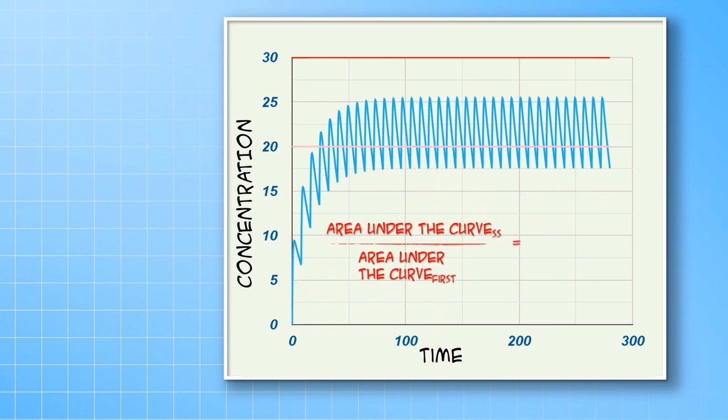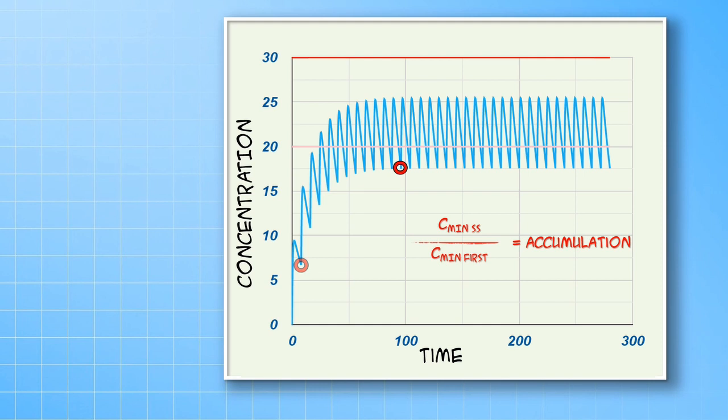Alternatively, you can just compare the trough or minimum concentrations. Okay, now that we have got the graphs sorted out, we can look at how changing the primary parameters affect the graphs beginning with bioavailability.